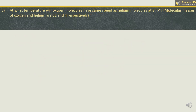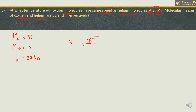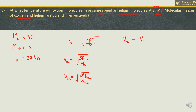At what temperature will oxygen molecules have the same speed as helium molecules at standard temperature and pressure? Molecular masses: oxygen is 32, helium is 4. Standard temperature means T_He = 273 Kelvin. Since speeds are equal, we set V_O₂ = V_He, using RMS speed = √(3RT/M): √(3R·T_O₂/M_O₂) = √(3R·T_He/M_He).